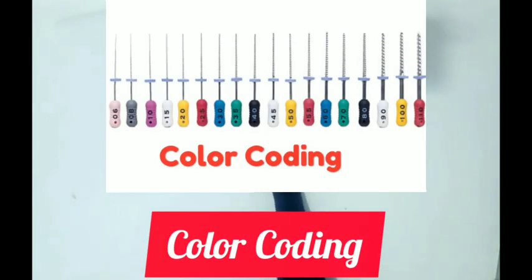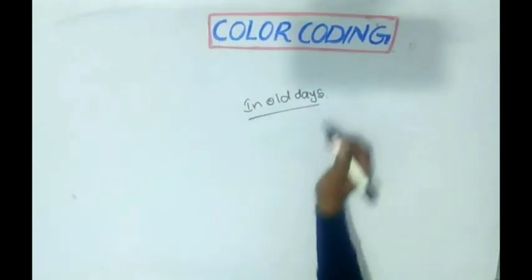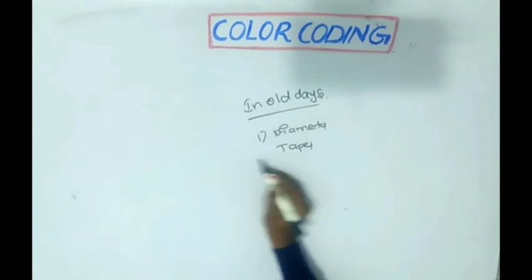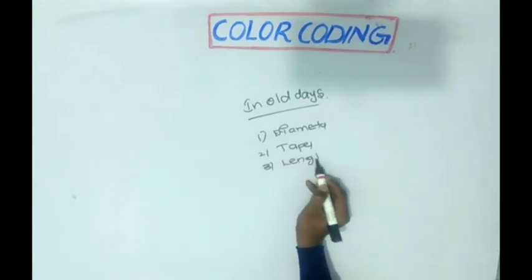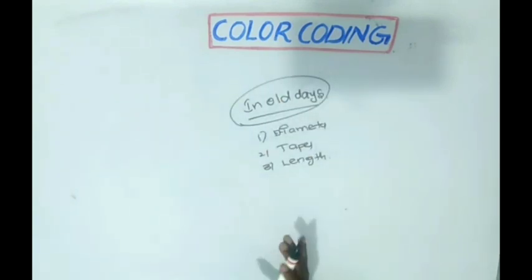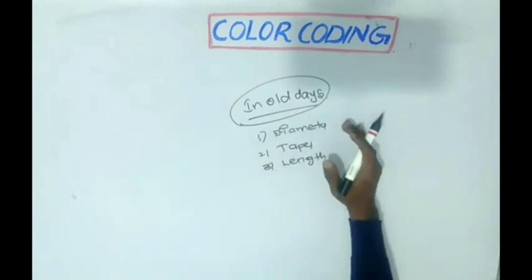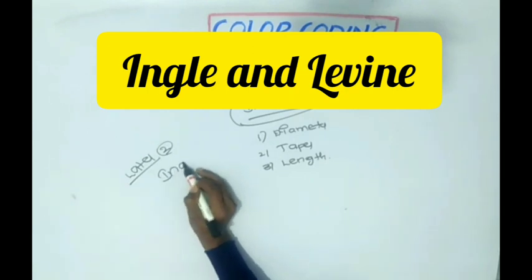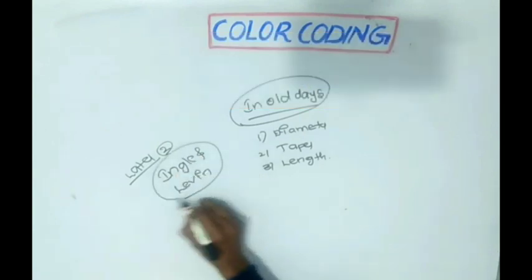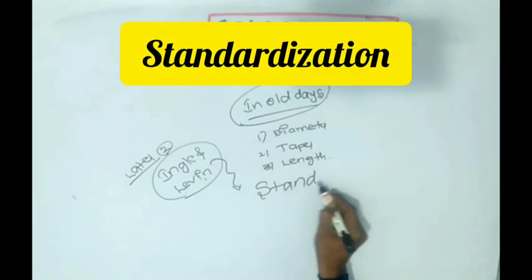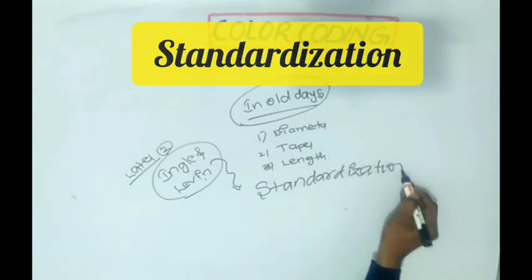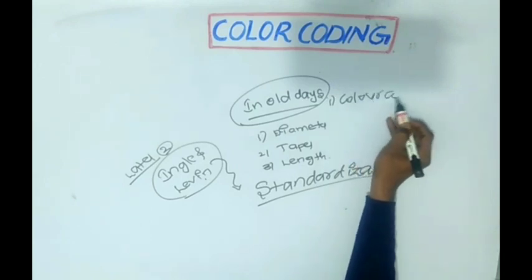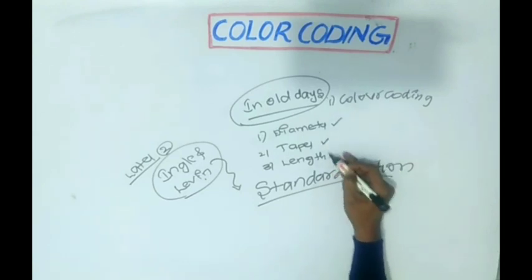In olden days, instruments were manufactured without any specification of diameter, taper, and length of the instrument. That means, manufacturers had manufactured endodontic instruments with no technical specification regarding the diameter, taper, and length. Later, two scientists, Ingell and Levin, proposed standardization of endodontic instruments. They explained basically about the various color coding of endodontic instruments, their diameter, taper, and length.